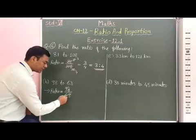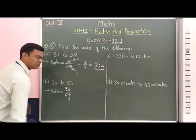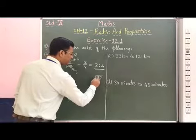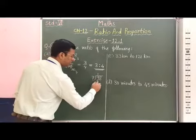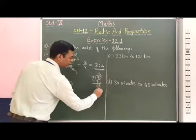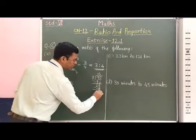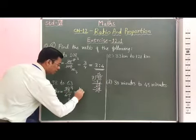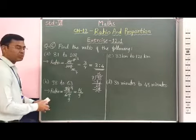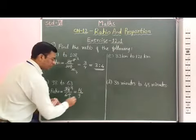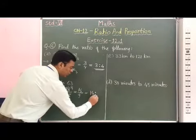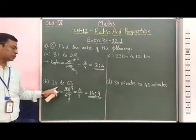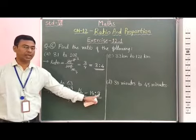If you divide 63 by 7, then 7 nines are 63. If you divide 98 by 7, the quotient is 14. Therefore, this is equal to 14 by 9. The numerator we can write first, then the ratio symbol, and the denominator second. Therefore, the ratio of these two numbers is 14 is to 9.